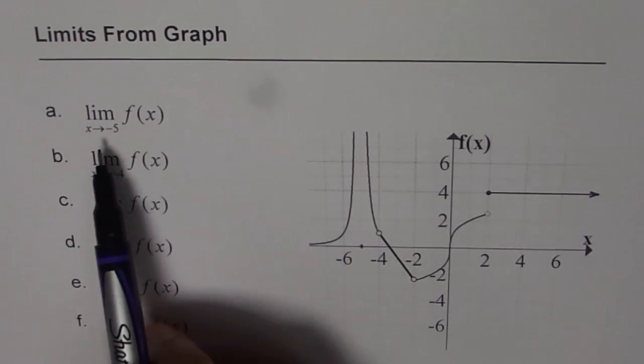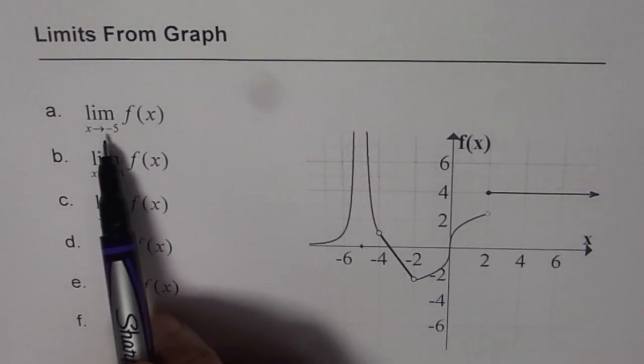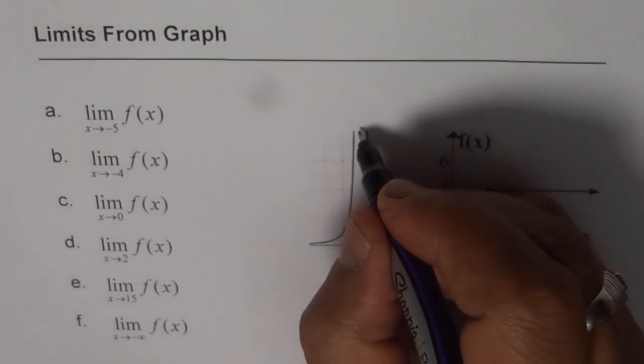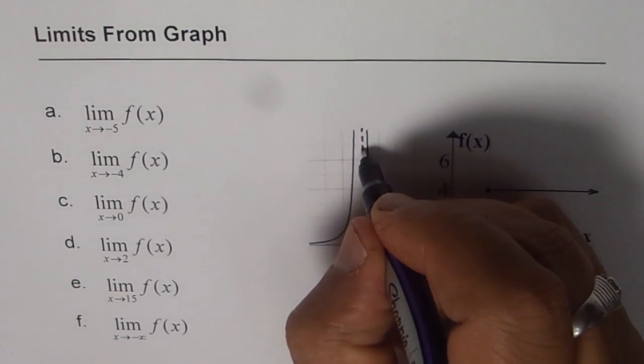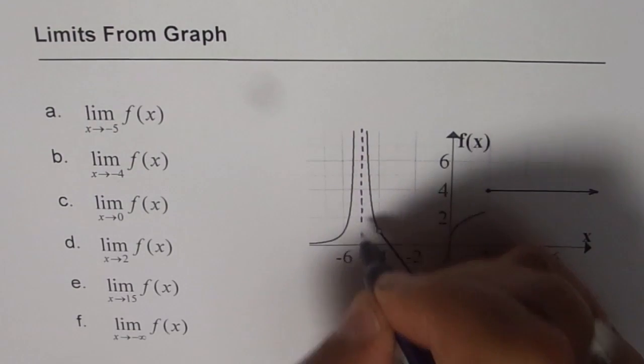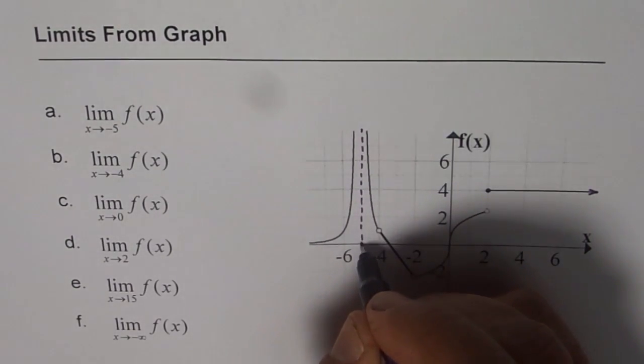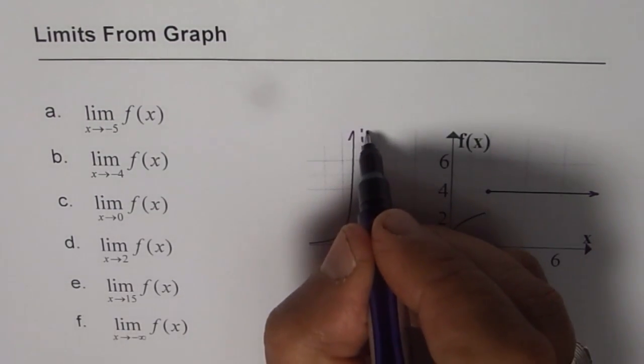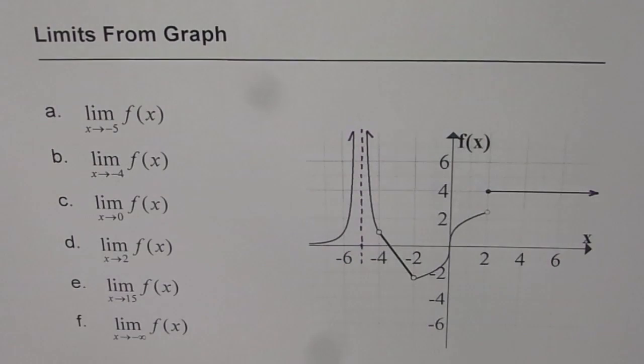The first one is limit of the function when x approaches minus 5. At minus 5, you see, we have a vertical asymptote. Function is approaching positive infinity from both sides of minus 5. So it's approaching positive infinity from both sides, not a fixed value.